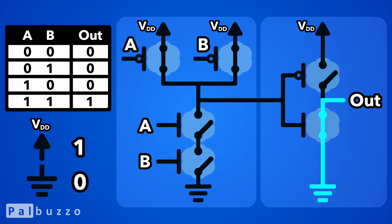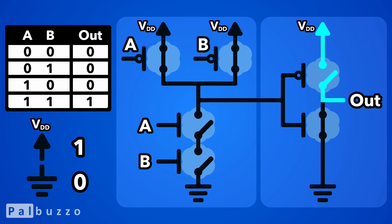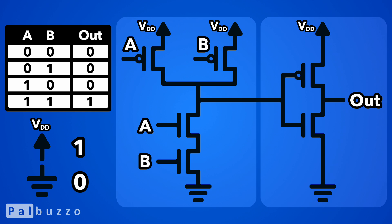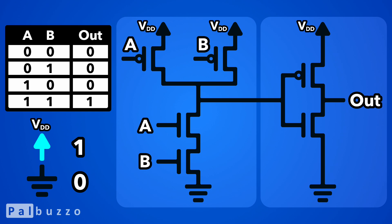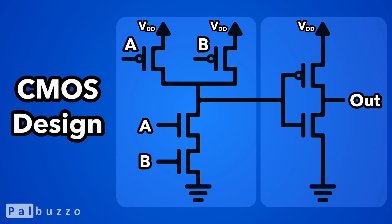And when the NMOS transistors connect an output to ground, the PMOS transistors disconnect that same output from VDD. So this design ensures that each output is always connected either to ground via the NMOS transistors or to VDD via the PMOS transistors, but never both at the same time. And we call this complementary MOS, or CMOS.